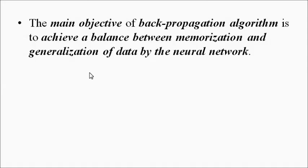Then it forms patterns, clusters of data which are provided to it, forms groups. And when new data is applied, it tries to use past information, past knowledge, and past experience on the basis of the generalization of the data. On the basis of that past knowledge and experience, the new data gives us an improved output with higher efficiency — application. So these are the three important things: learning, generalization, and application. The main objective of the backpropagation algorithm is to strike a balance between these three processes.